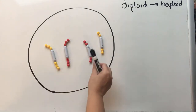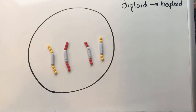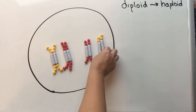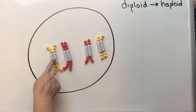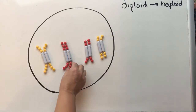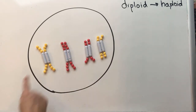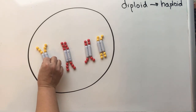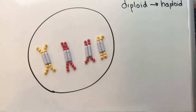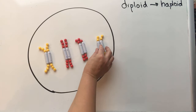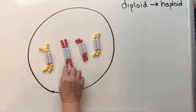Starting with our normal setup — two copies of chromosome 1 and two copies of chromosome 2 — when we go through S phase, we duplicate all of our DNA the same way we did for mitosis. The magnets in our model represent the centromeres. A lot of people get confused: after you duplicate your DNA, you still only have four chromosomes, because chromosomes are held together at the centromere and we count centromeres. These are called sister chromatids because they are genetically identical — just copies of one another.